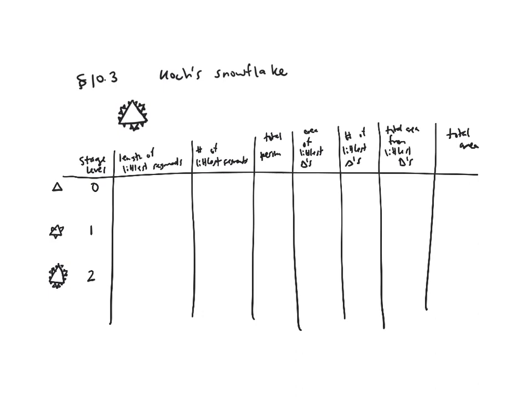Let me do the first few levels for you, and then you can see if you can generalize and finish the pattern. The length of the littlest segments depends on the triangle side length — different problems will have different numbers, so I'll just call it s. So the length of the littlest segments at stage zero is just s. At stage one, the length of the littlest segments is going to be one third of s, because each little triangle is a third the length of the total side length of the original triangle.